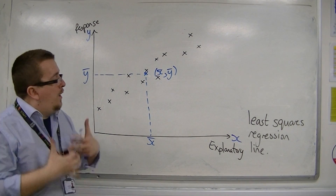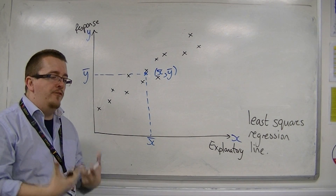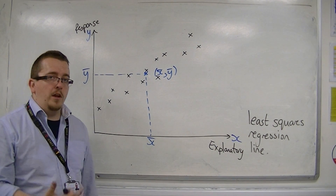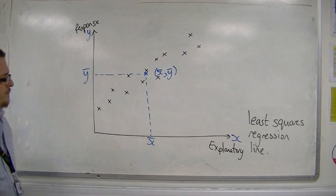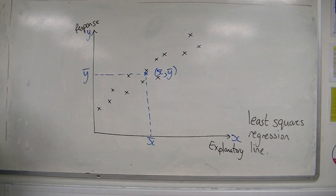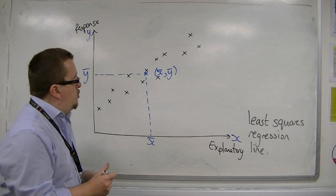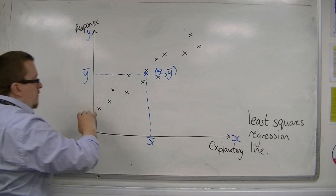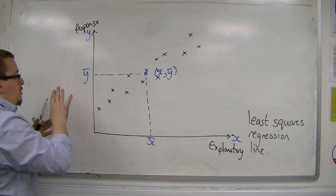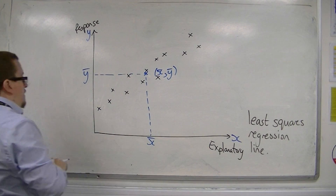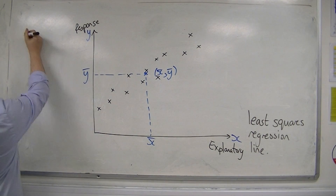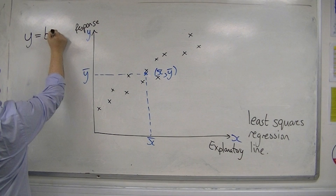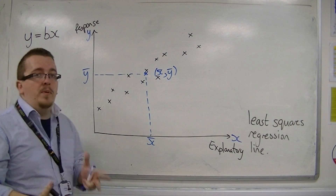In this video, I want to show you how we can actually find the equation of this line that goes through it. The equation of a line going in the correct direction would be y is equal to bx, for some gradient b.